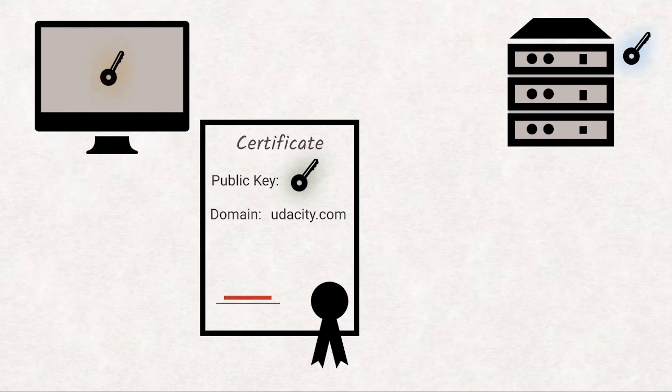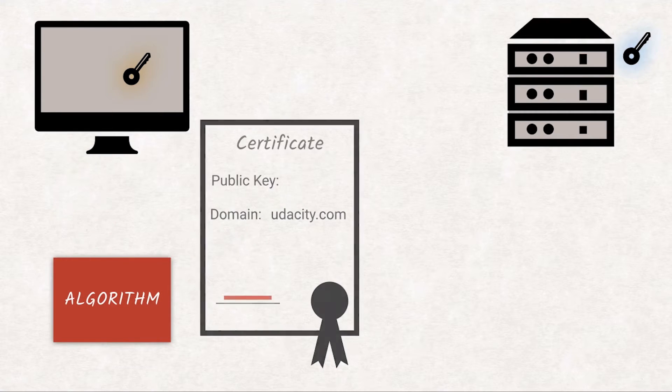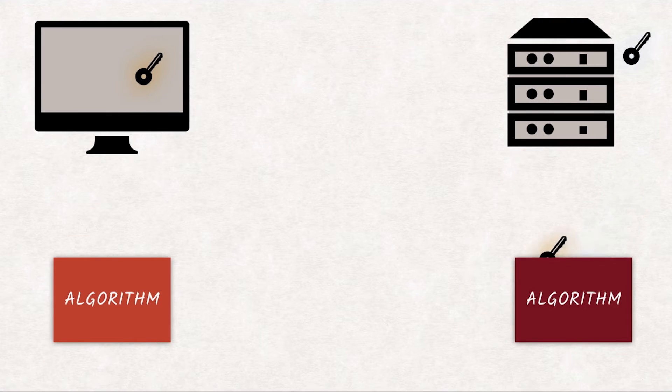Now the client generates a random key for symmetric encryption to be used from here on in. The browser encrypts the random key with the server's public key and sends it over. This has two benefits.